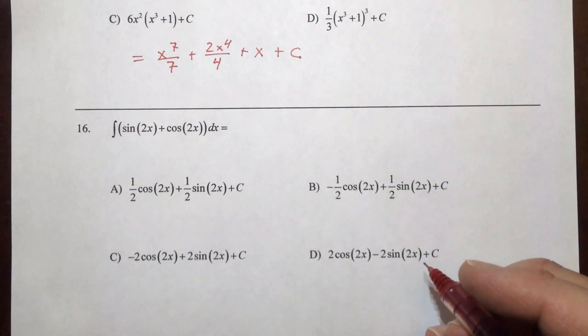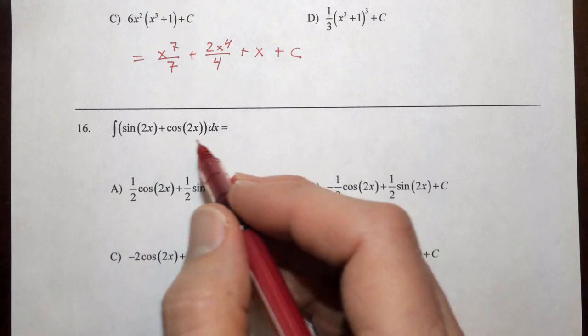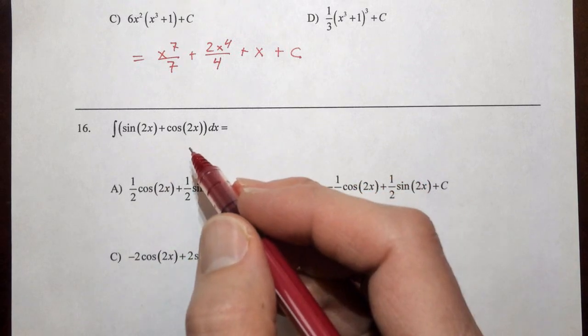16, we have more substitution happening. This is similar to number 14, except we've got sine and cosine, so it's just 2 for the price of 1 here.